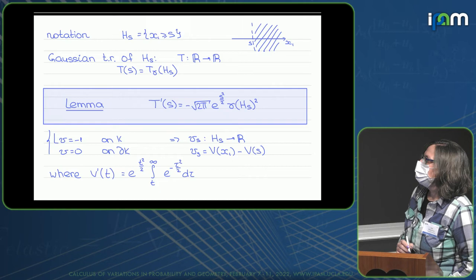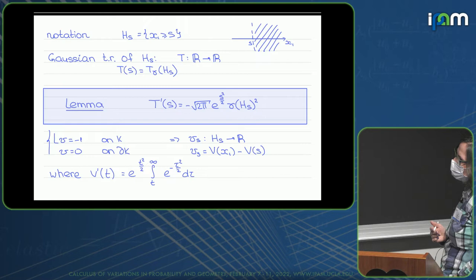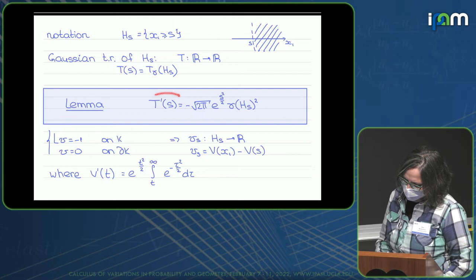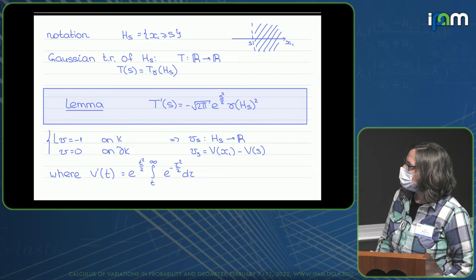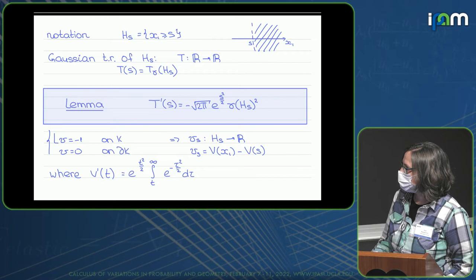We have the following lemma. For such torsional rigidity, its derivative T prime has a special form: it is minus square root of 2π times e to the power s squared over 2, times the square of the Gaussian measure of half-space H_s. This component — the square of the Gaussian measure — is very meaningful for the following applications.